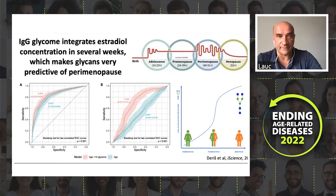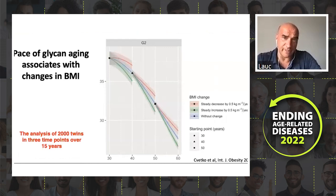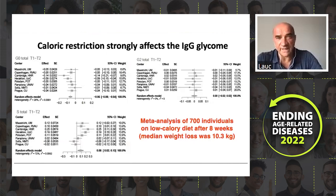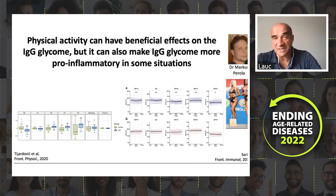We know that bariatric surgery can significantly improve glycan age — we had a patient improving by 37 glycan years in six months. Not everybody improves that much, but the majority improve significantly. Regular weight loss also seems to work. Looking at 2,000 twins over 20 years, those gaining weight were aging faster than those losing weight. We had 1,000 people in eight European centers on a low-calorie diet — the diet reduced glycan age in everybody, but nobody can maintain it long-term. Five different maintenance diets were tested, and on each one some people improved and some got worse — it's highly individual. There is no magic diet. The same goes for exercise: the majority of people who started exercising in middle age overtrained and got worse, so exercise has to be carefully optimized.